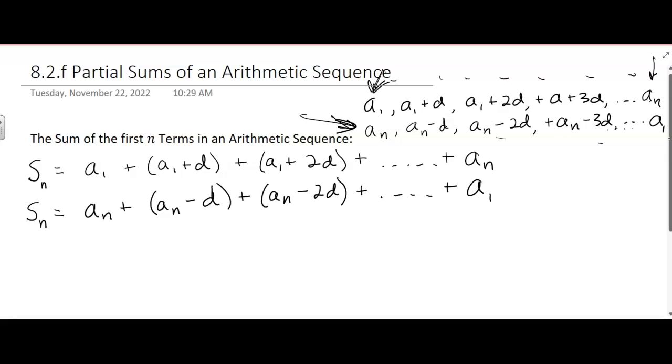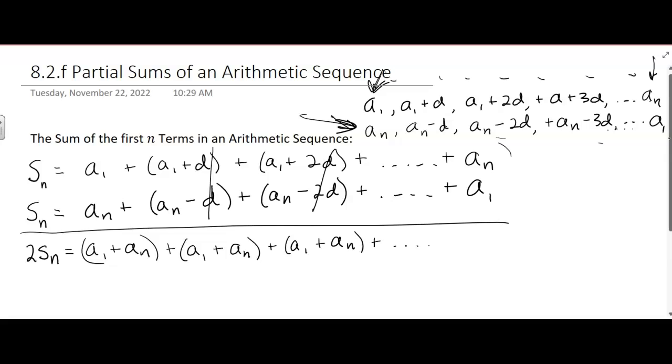Now we can add the two equations. What's S n plus S n? 2S n. And then what's happening? You get a sub 1 plus a sub n. The d's cancel out, and you get another a sub 1 plus a sub n. The 2d minus 2d cancels out. So you get a sub 1 plus a sub n. It keeps going in that pattern until the last part, which is a sub 1 plus a sub n.